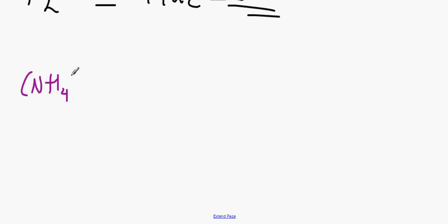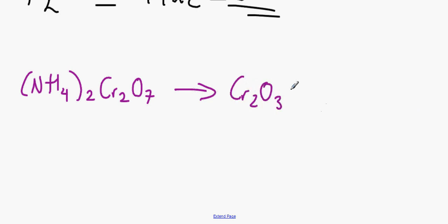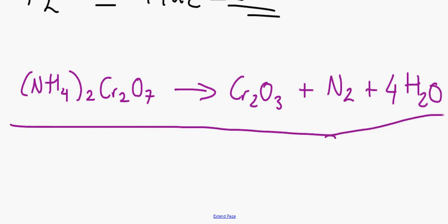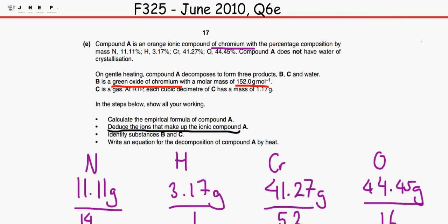To tidy everything up: compound A is (NH4)2Cr2O7, and it decomposes to give Cr2O3 (compound B), plus N2 (compound C), plus H2O. We need to check the hydrogen and oxygen balance. We have 8 hydrogen atoms in compound A, so that gives 4 H2O molecules. For oxygen: 3 from Cr2O3 plus 4 from H2O makes 7, and we have 7 in compound A — so everything is balanced. If you have any questions please don't hesitate to comment.